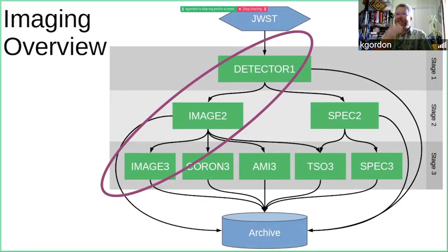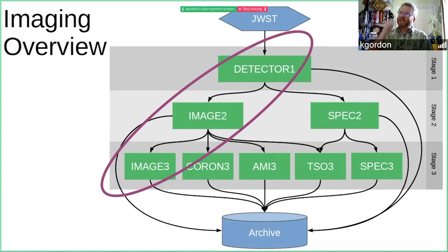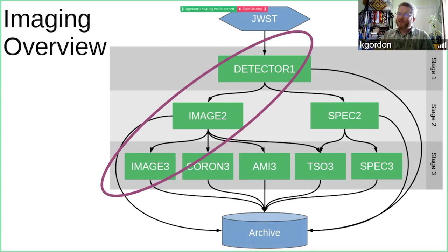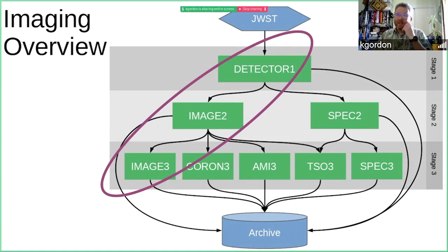Here's an overview of the pipeline: we get data down from JWST and there are three stages of the pipeline, then we put the results into the archive. At every stage there are results that go into the archive. The first stage is detector one, where we work on the ramps and turn them into uncalibrated slopes by fitting lines. The second stage works on individual exposures, doing things like flat fielding. Stage three, for imaging, is where we make mosaics and do source extraction.